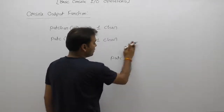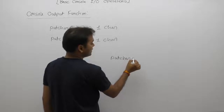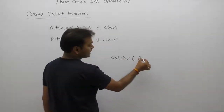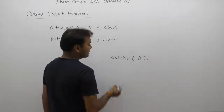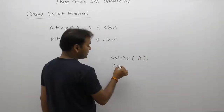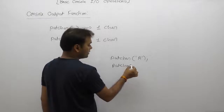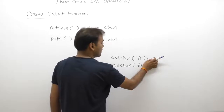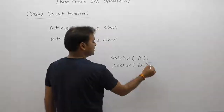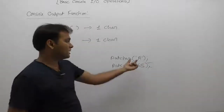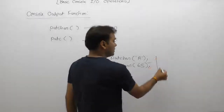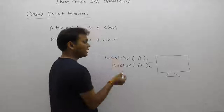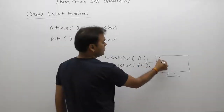If you want to display a single character on the monitor, you can use either the putc function or the putchar function. Both putchar and putc can accept a direct character or an ASCII value. Both produce the same result and have exactly the same meaning — there is no difference between them.